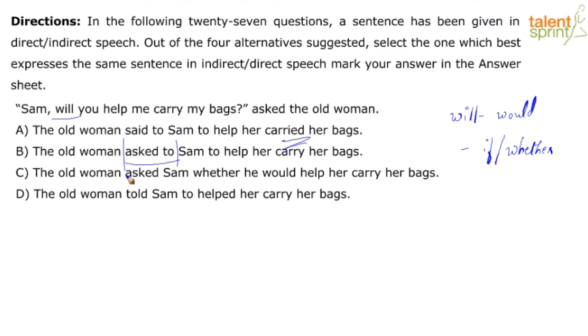C: the old woman asked Sam whether he would help her carry her bags. Because of this rule, we can quickly see will has changed to would, so it's C. The old man told Sam to help her - this is an obvious error. So our answer is C.